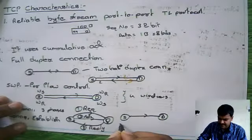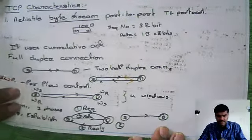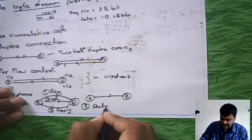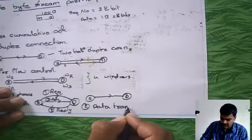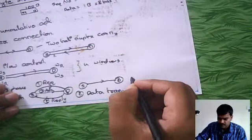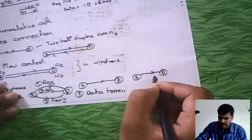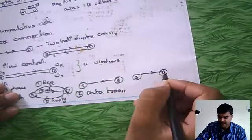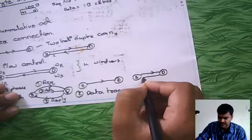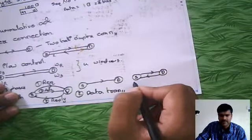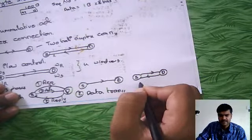Now you can transmit the data. The second stage is data transmission. In the data transmission phase, the source transfers whatever data it wants to send to the destination. The destination also, if it wants to send data back to the source, will transmit. This is the data transmission state.